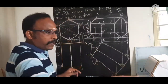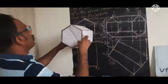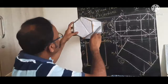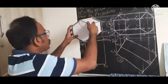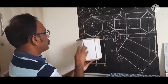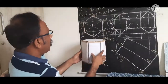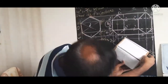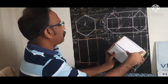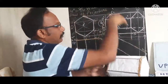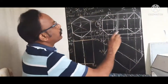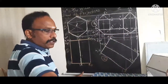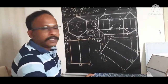This is the end of our solution. To summarize quickly: in step 1, keep the object in initial position and draw the front view; in step 2, draw the corresponding top view; then tilt so the axis makes 30 degrees to VP and draw the tilted top view; finally project the corresponding front view, joining all visible points as thick lines and invisible points as dashed lines. Thanks for watching this video.